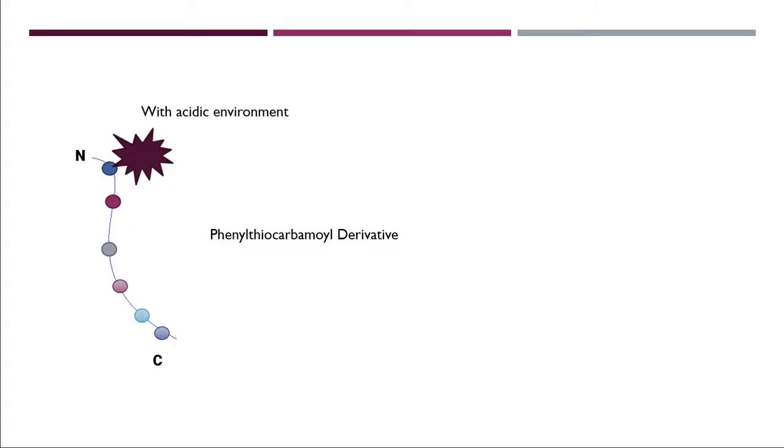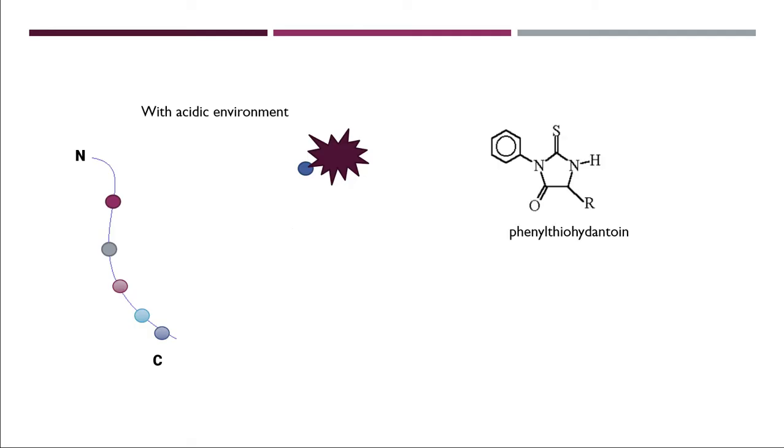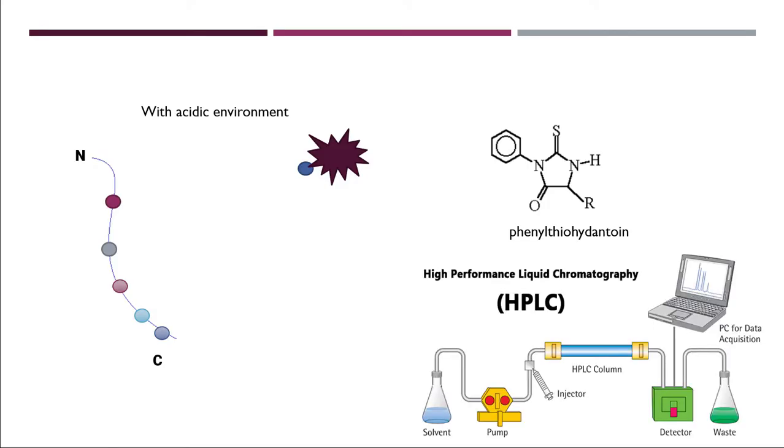Then, in acidic environment, it will remove this amino acid from this polypeptide chain and form a compound called phenylthiohydantoin. Now, this phenylthiohydantoin can easily be detected by using HPLC.